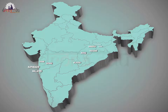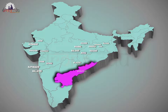Ranchi, Lohardaga and Palamau in Jharkhand. Jamnagar, Junagadh, Kheda and Bhavnagar in Gujarat. Shahdol, Mandla and Balaghat in Madhya Pradesh.